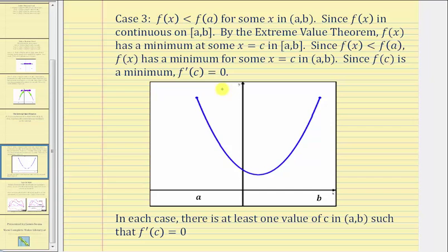To illustrate case three, let's consider the graph shown below. If f of x is less than f of a for some x in the open interval, at some point the function would have to be decreasing. But because f of a equals f of b, the function would then have to be increasing in order to reach f of b. By the extreme value theorem, we know there must be one x value where we have a global or absolute minimum in the open interval. This x value is the value of c guaranteed by Rolle's Theorem, and at this minimum the slope of the tangent line would be zero, and therefore f prime of c equals zero.